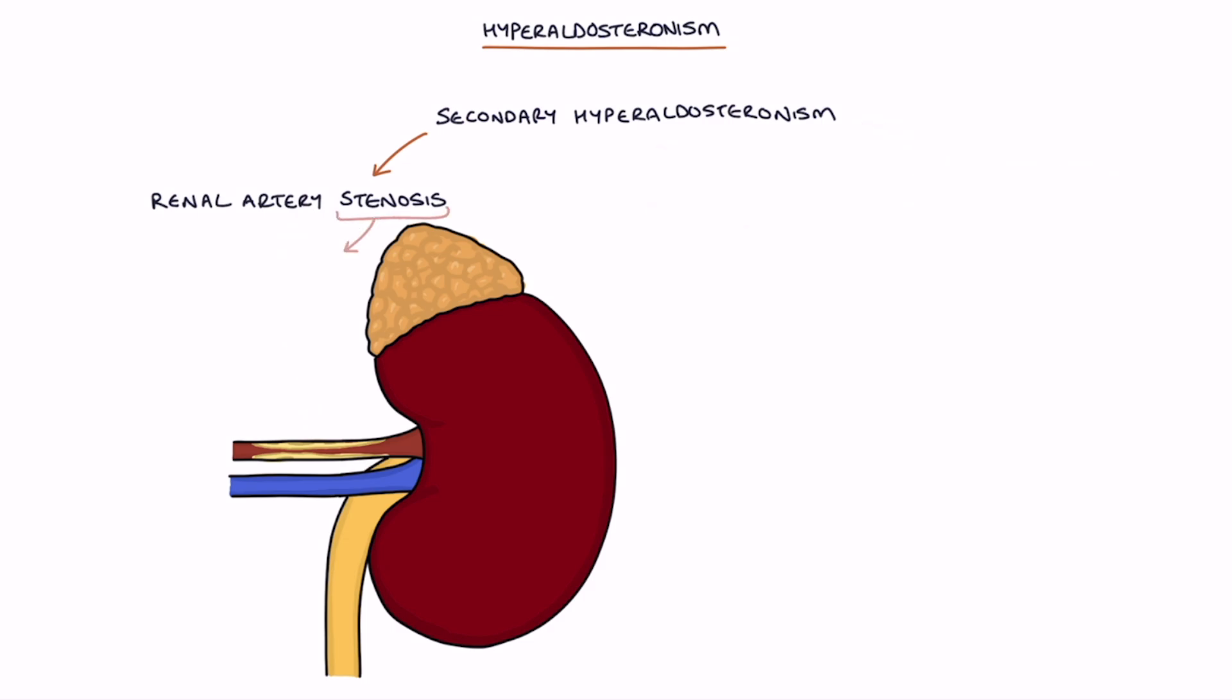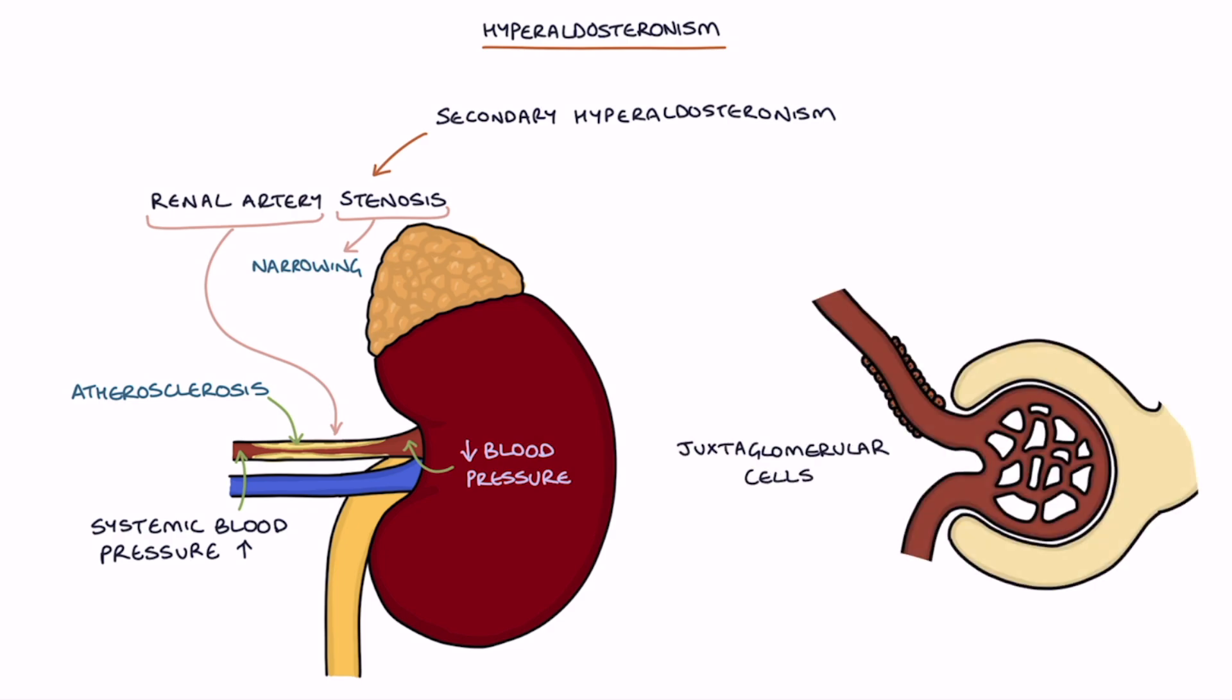Renal artery stenosis refers to narrowing of the renal arteries that supply the kidneys, usually due to atherosclerosis, similar to coronary artery narrowing in angina. The narrow entry to the kidney results in lower blood pressure inside the kidney, even when the systemic blood pressure is high. The juxtaglomerular cells think that the entire body has a low blood pressure problem and respond by excreting lots of renin, which in turn increases the aldosterone level.